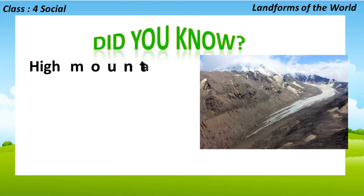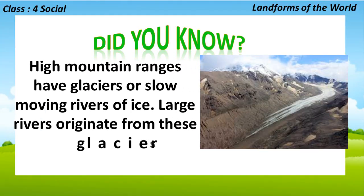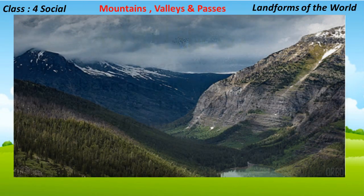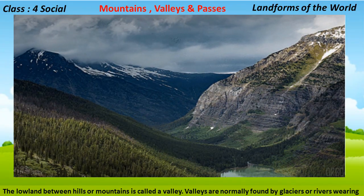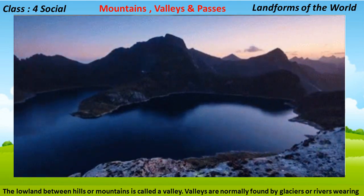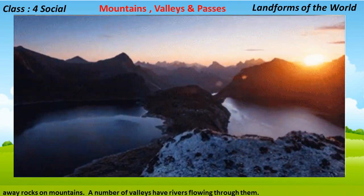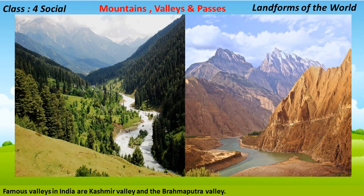Did you know? High mountain ranges have glaciers, or slow-moving rivers of ice. Large rivers originate from these glaciers. The lowland between hills or mountains is called a valley. Valleys are normally formed by glaciers or rivers wearing away rocks on mountains. A number of valleys have rivers flowing through them. Famous valleys in India are the Kashmir Valley and the Brahmaputra Valley.